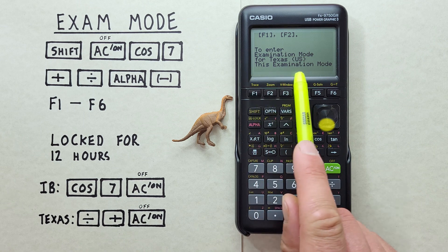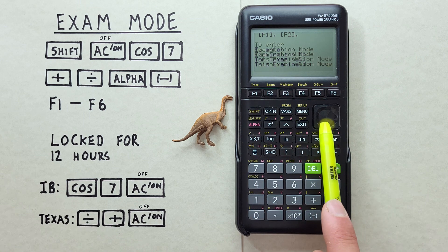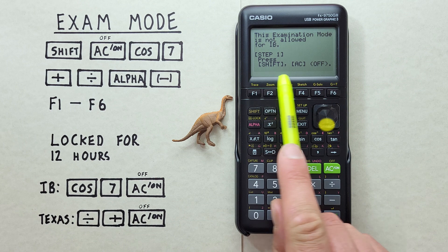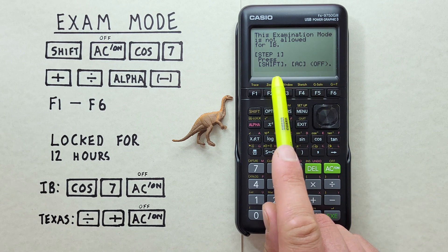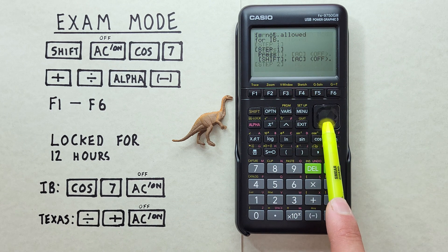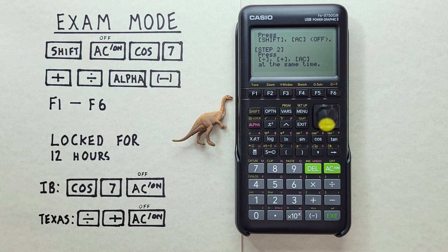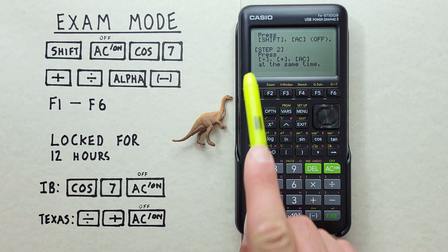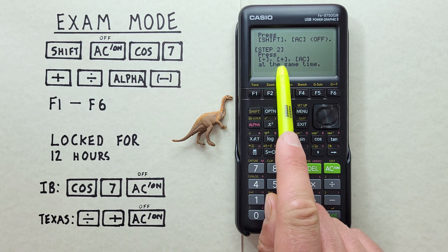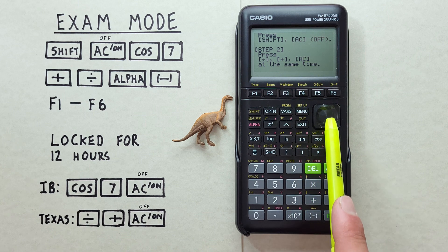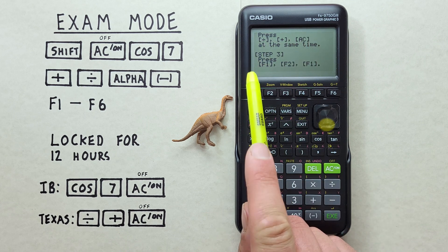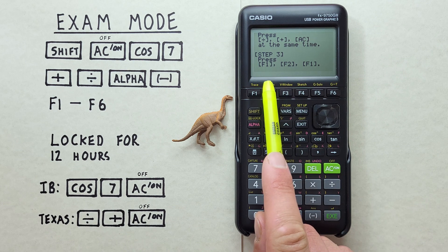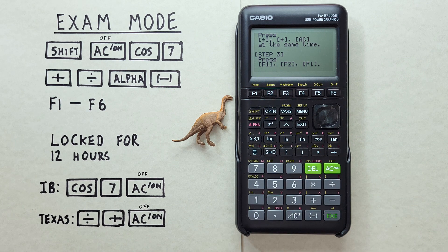To enter Texas Mode, again, we start by turning off our calculator with the Shift AC off. But then this time, we press and hold the Divide, Plus, and AC key. Then, again, we'll get some menus that pop up, asking us to confirm we want to turn on Examination Mode. If we confirm through that, we'll be in the mode, and we'll be locked in for 12 hours.